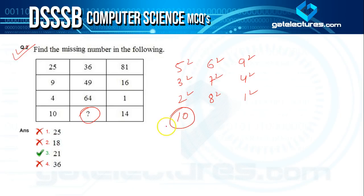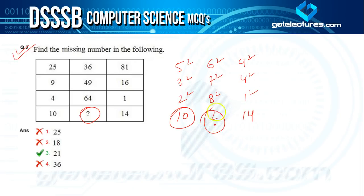We notice that 5 + 3 + 2 = 10, and 9 + 4 + 1 = 14 — these are the sums of the square roots in each row. So the missing number should be 6 + 7 + 8 = 21. Hence the answer to this question is option three, that is 21.